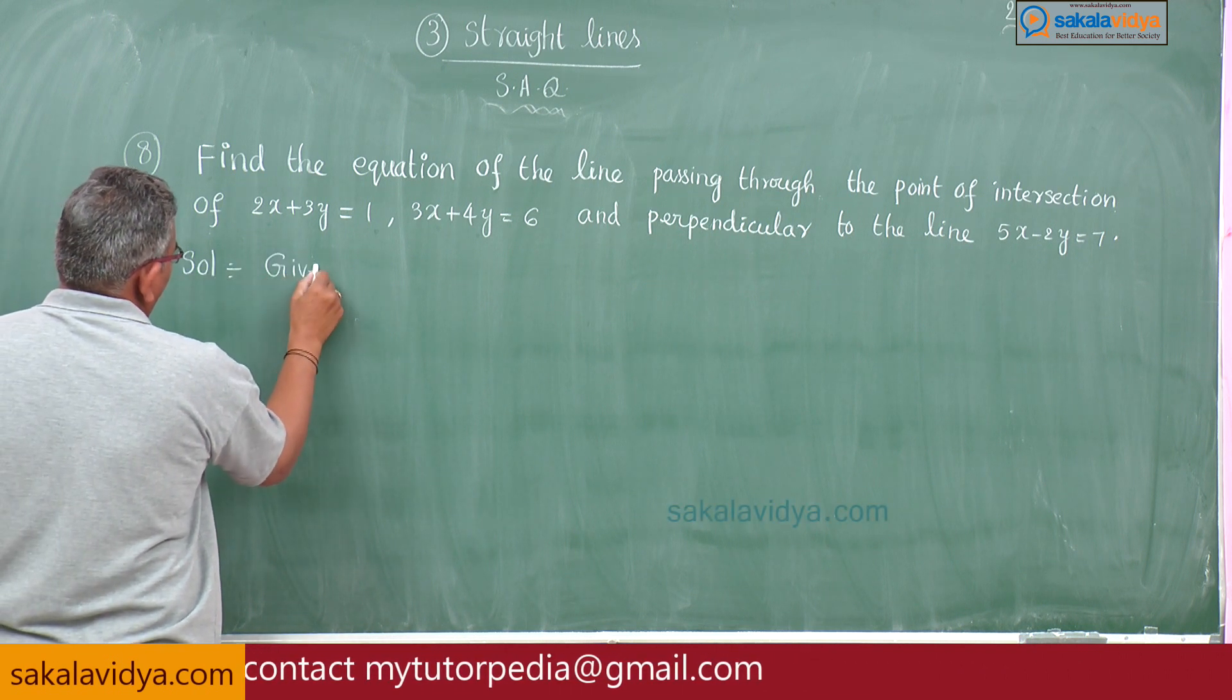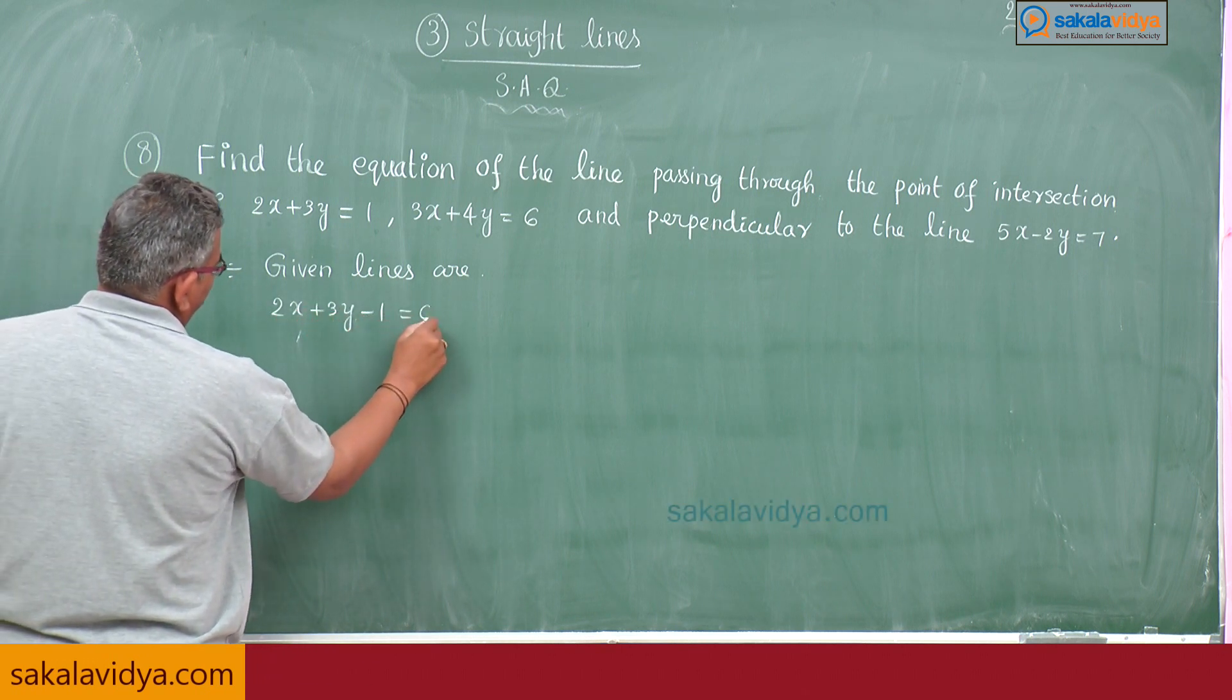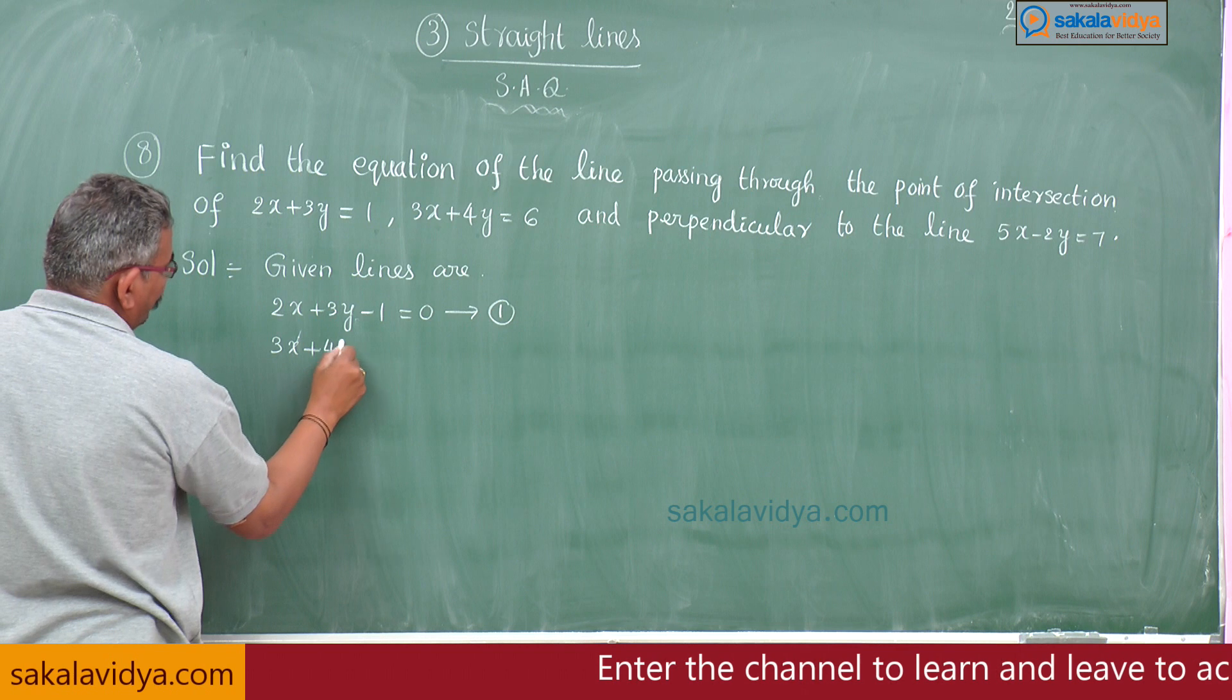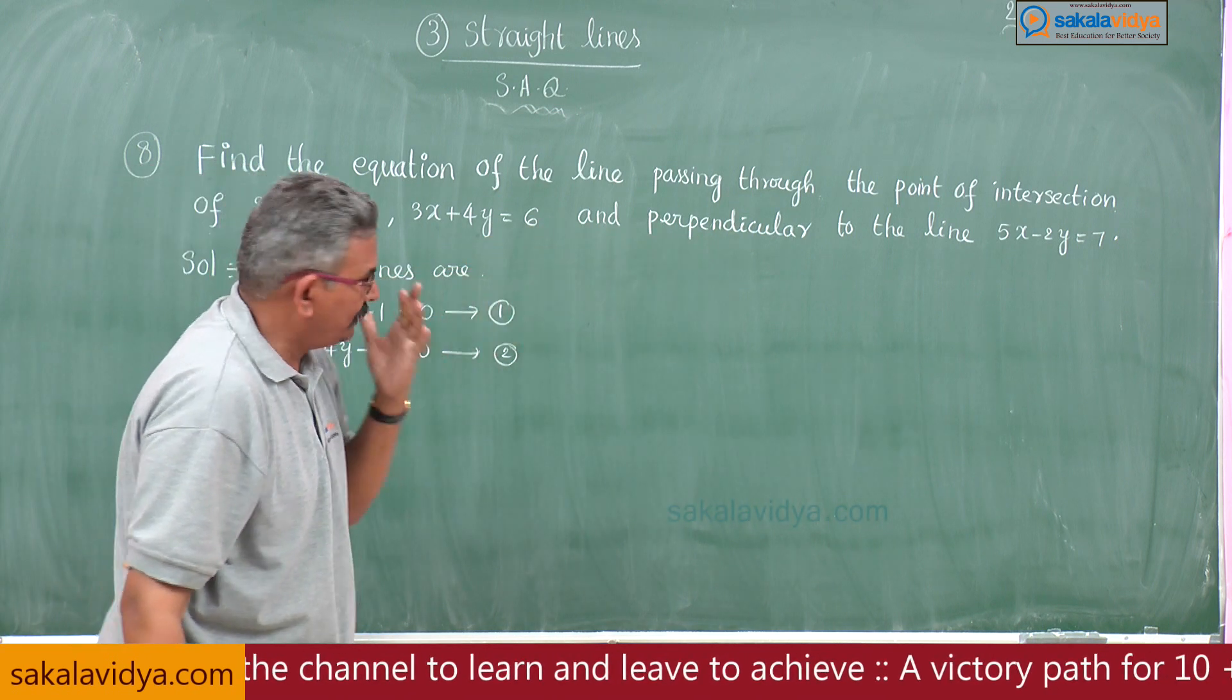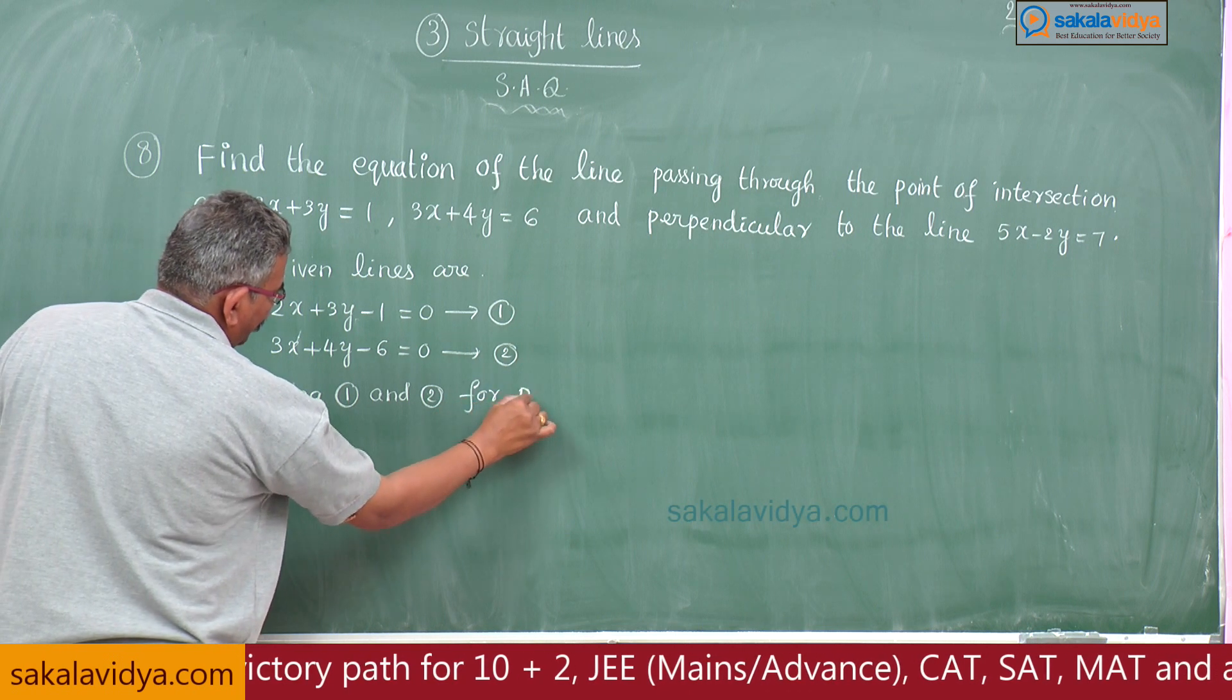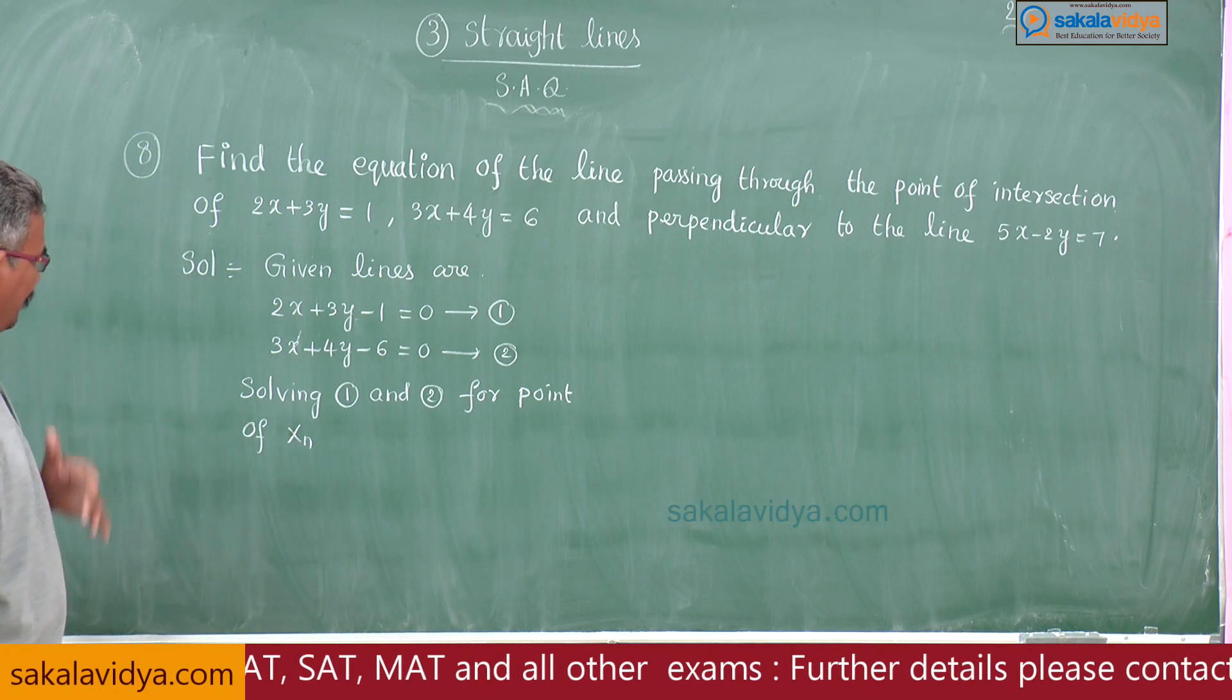Given lines are 2x+3y-1=0, equation 1 for our convenience. Similarly, bring 6 to this side: 3x+4y-6=0. Using that keyword point of intersection, solving 1 and 2 for point of intersection. This is a symbol for intersection, intersecting at this point.